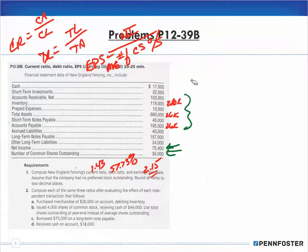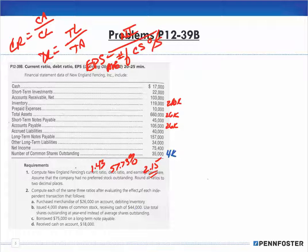Moving on to Transaction B: issue 4,000 shares of common stock, receiving 44,000 in cash. So common stock increases by 4,000 (to 39,000) and cash increases by 44,000. Remember — these are independent transactions, so we go back to the original balances. For the current ratio: cash is now 17,000 + 44,000 = 61,000.